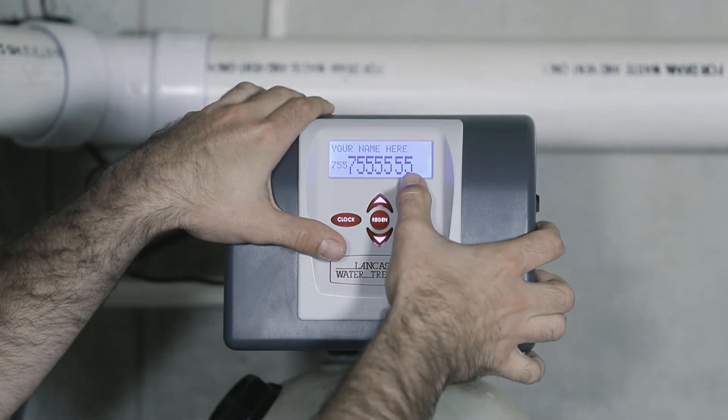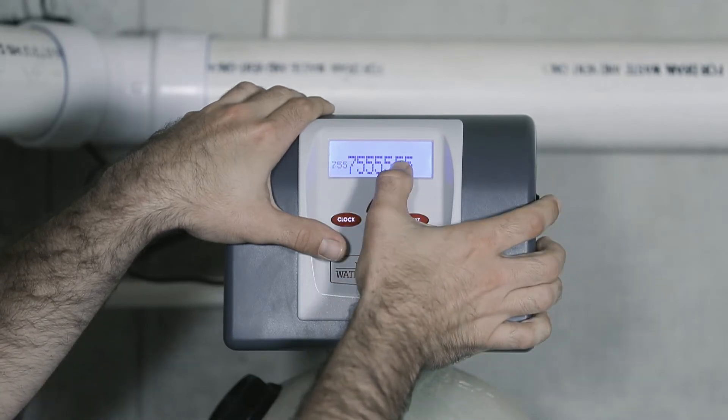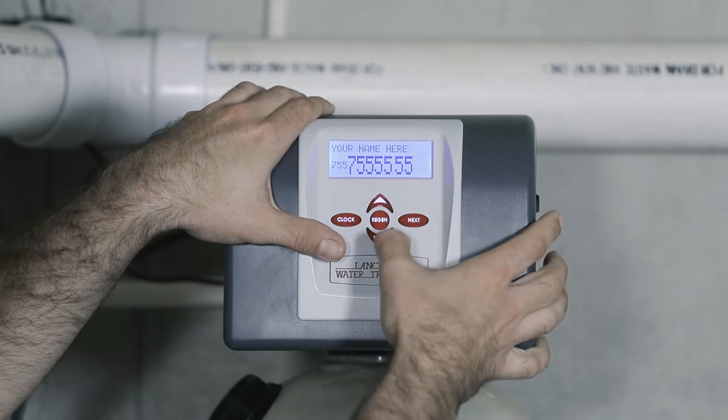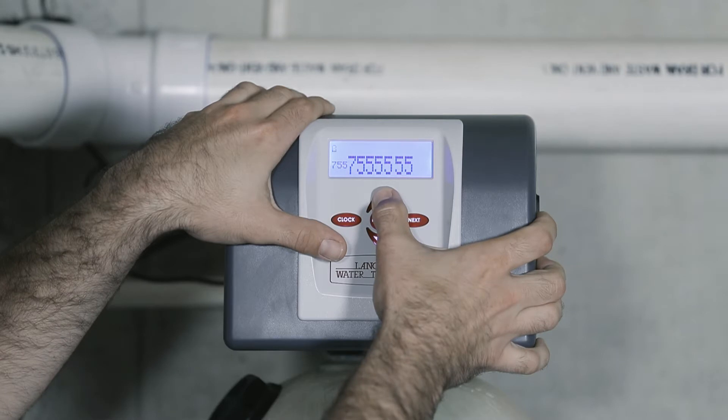When you get to the last digit in the telephone number, press next and your name will begin to flash. Again, use the up and down arrows to start entering the digits.